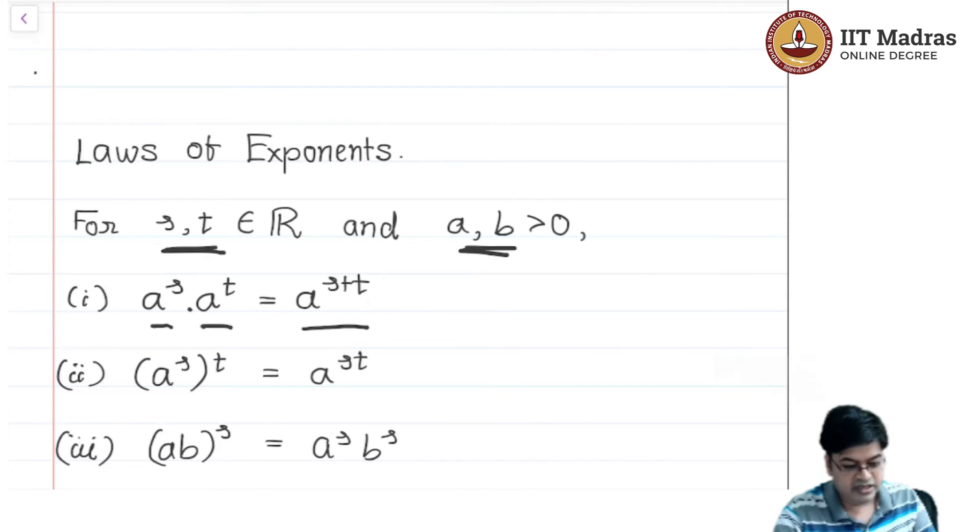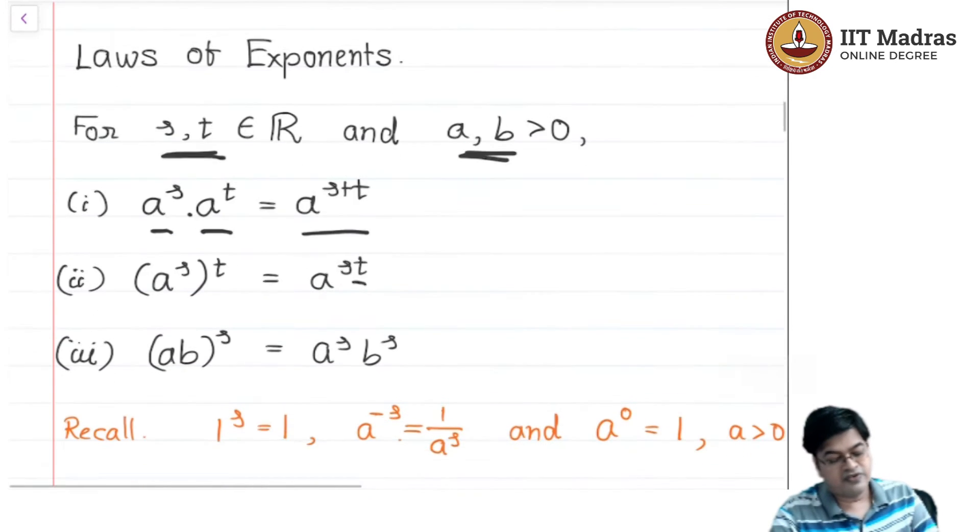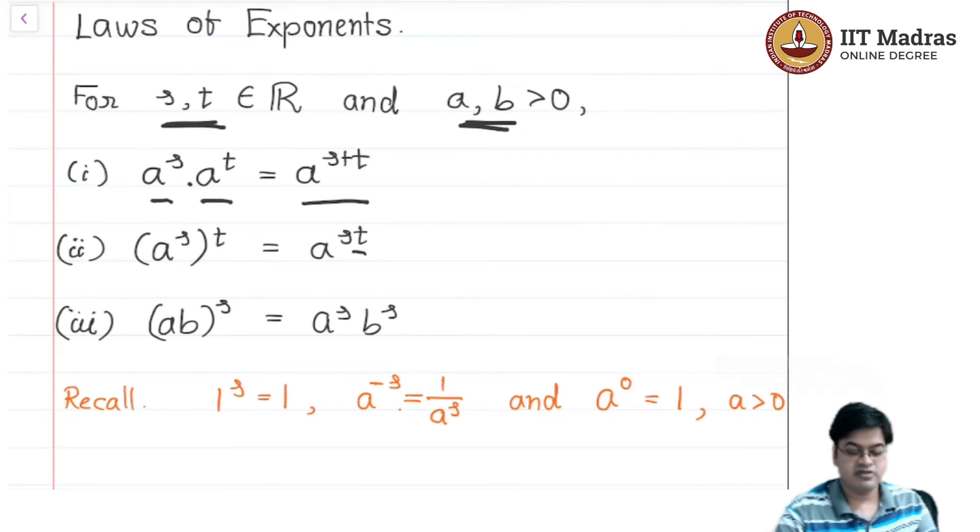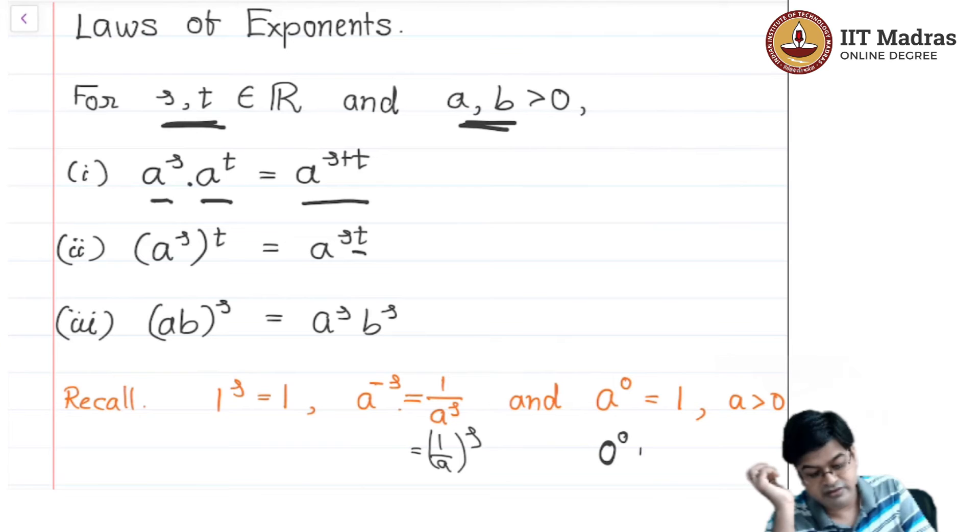Remember, here product is becoming addition. These are crucial points. a raised to s, the whole raised to t, is equal to a raised to st. So a raised to operation is becoming a product here. ab raised to s is a raised to s times b raised to s. And then obviously, you need to know that 1 raised to s is always 1 for every s belonging to R. a raised to minus s equals 1 by a raised to s. You can also write this as (1/a)^s. a raised to 0 is always 1. Remember your a is always greater than 0, because 0 raised to 0 is undefined.